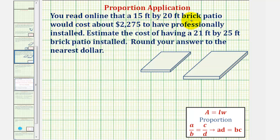You read online that a 15 by 20 foot brick patio would cost about $2,275 to have professionally installed. Estimate the cost of having a 21 by 25 foot brick patio installed. It says round the answer to the nearest dollar.